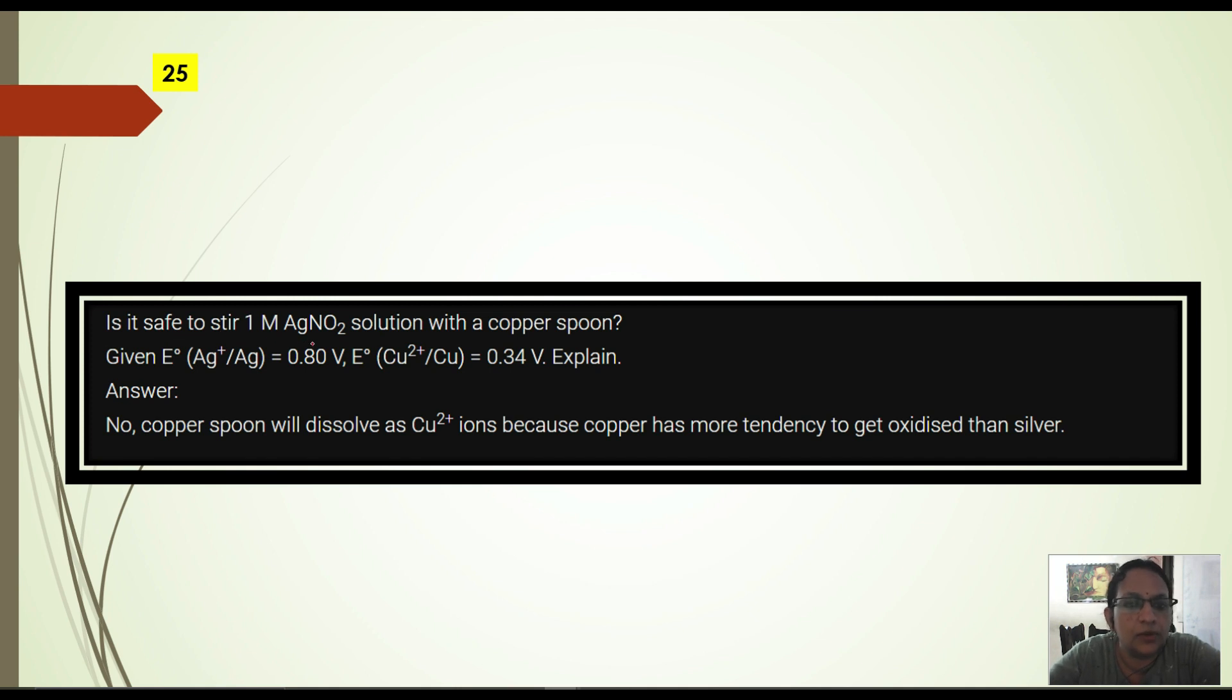Is it safe to stir 1 molar silver nitrate solution with a copper spoon? E° value of Ag+/Ag is 0.8 volt and copper is 0.34 volt. So can we stir it with copper spoon or not? Copper is less than silver. So the answer is no. Copper spoon will dissolve as copper ion because the copper has more tendency to get oxidized than silver.